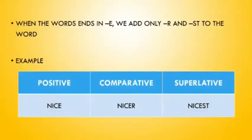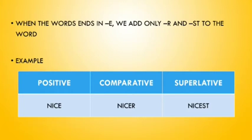The second rule: when the word ends in -e, we add only -r and -st to the word. For example, the word 'nice' ends in -e. To make it into comparative and superlative, we add -r and -st. So it becomes 'nice,' 'nicer,' 'nicest'.